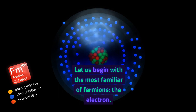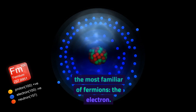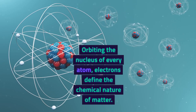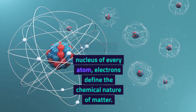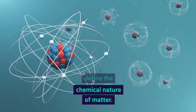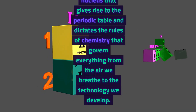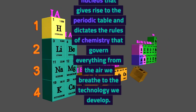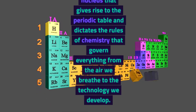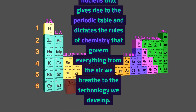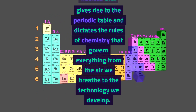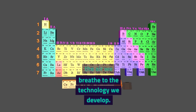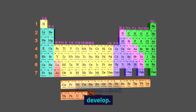Let us begin with the most familiar of fermions: the electron. Orbiting the nucleus of every atom, electrons define the chemical nature of matter. It's their arrangement around the nucleus that gives rise to the periodic table and dictates the rules of chemistry that govern everything from the air we breathe to the technology we develop.